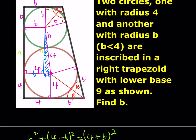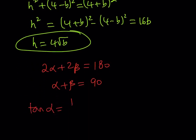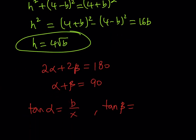We don't know this length — let's call that x. This piece is also h, and this is 4. Using trigonometry: tangent alpha can be written as b over x, and tangent beta is 4 over 5.